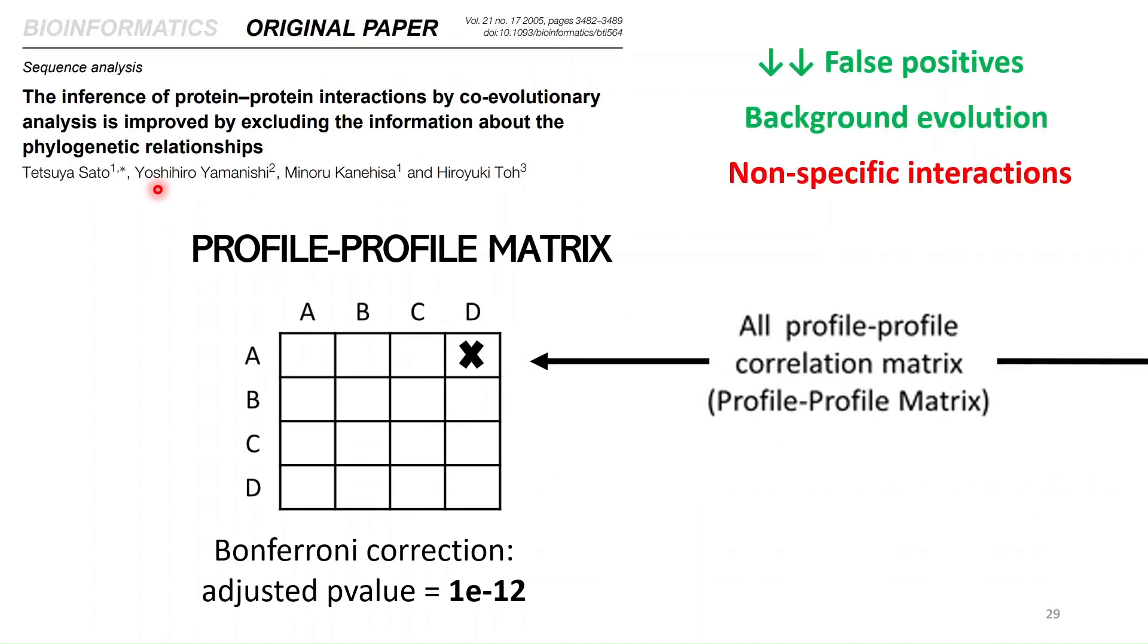The thing is that this reduced the number of false positives because it is correcting for background evolution, which is basically shared evolutionary events that are common to proteins, but now we are not addressing anything related to non-specific interactions.